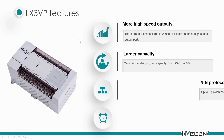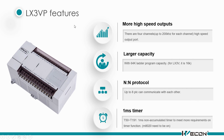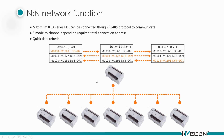Here are the 3VP features. As mentioned, 3VP has a high-speed output port that can support up to 200 kHz for each channel. It also comes with a larger capacity and the N2N protocol, and can support a 1ms timer. The N2N protocol is used for communication between POCs — it can support a maximum of 8 POCs communicating with each other, with one master POC and seven slave POCs. The master POC can read register values from any of the seven slave POCs.